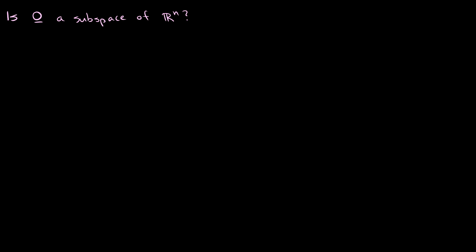Here's a question: is {0} a subspace of Rn? There are three conditions to check. First, we need to check if the zero vector is in our subspace — which is just zero — and of course it is. Second, we need to check that for any two vectors U and V in our subspace, U plus V is in our subspace. Here the only possibility is zero plus zero, which equals the zero vector, so it's going to be in the zero subspace.